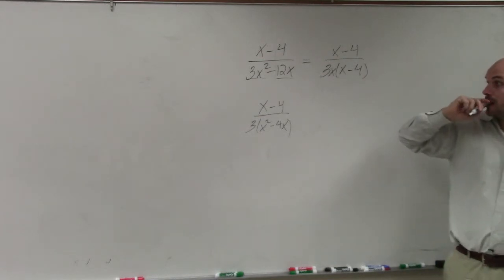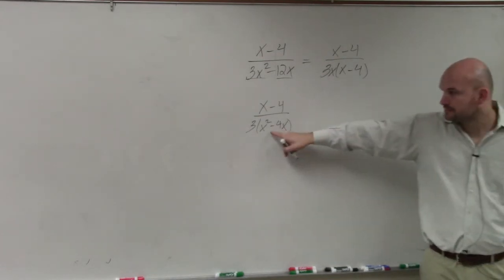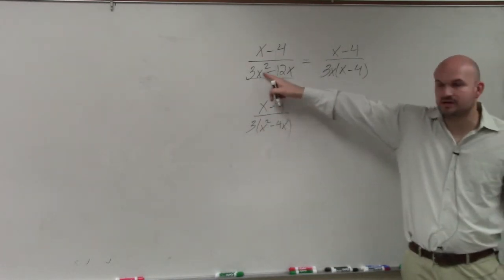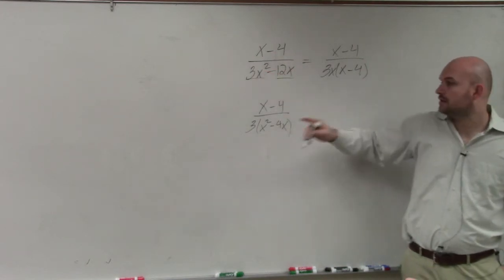No, if you take 3 out of 3x squared minus 12x, if you take 3, it just becomes x minus 4. No. The x squared is still there. Yeah, no, and then you factor out the x.